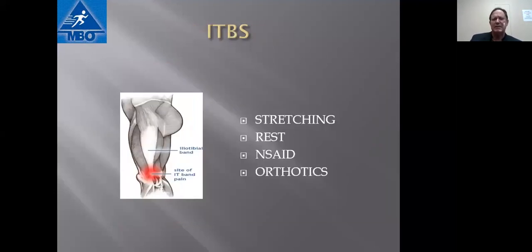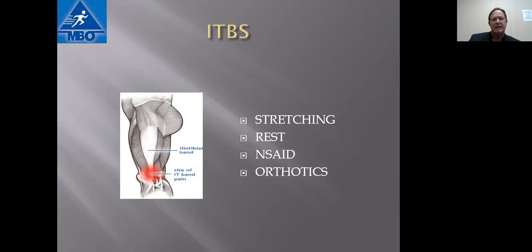A very specific tendonitis is iliotibial band syndrome. There's a tendon along the lateral aspect of the knee, and as you flex and extend your knee, the tendon tends to go back and forth across a bony prominence on the outside of the knee, causing lateral pain. It's very common in runners. Treatment generally involves stretching, and if you're running on a circular track, alternating which direction you go. Also: a period of rest, anti-inflammatory medication, and sometimes orthotics in the shoes. Very rarely is surgical intervention indicated.